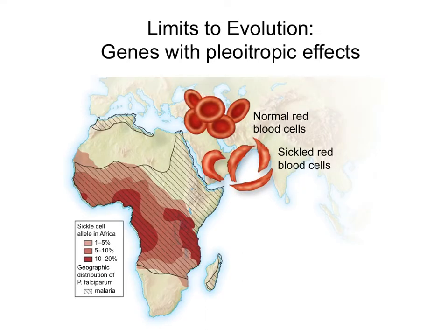When you have a gene with a pleiotropic effect, like sickle cell anemia, it has favorable effects: if you are heterozygous for it, you develop resistance to malaria. But if you are homozygous, you have sickle cell anemia and a very short lifespan. Balancing those two effects is also a limit to evolution. Evolution will want to favor the heterozygous, but you cannot favor the heterozygous without having an increase in the homozygous recessive, which is a big problem.